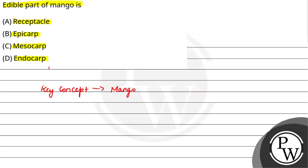Drupe fruits are stony fruits, which have a hard shell present. So after fertilization, when the ovary ripens, it transforms into pericarp. And ovules transform into seeds. The pericarp is further distinguished into three different layers.